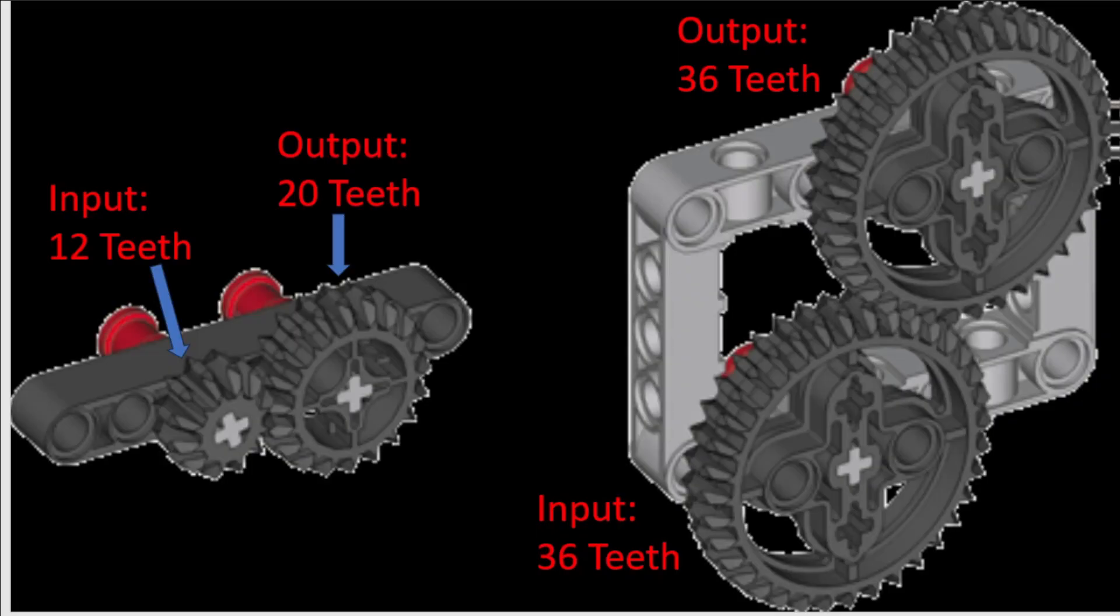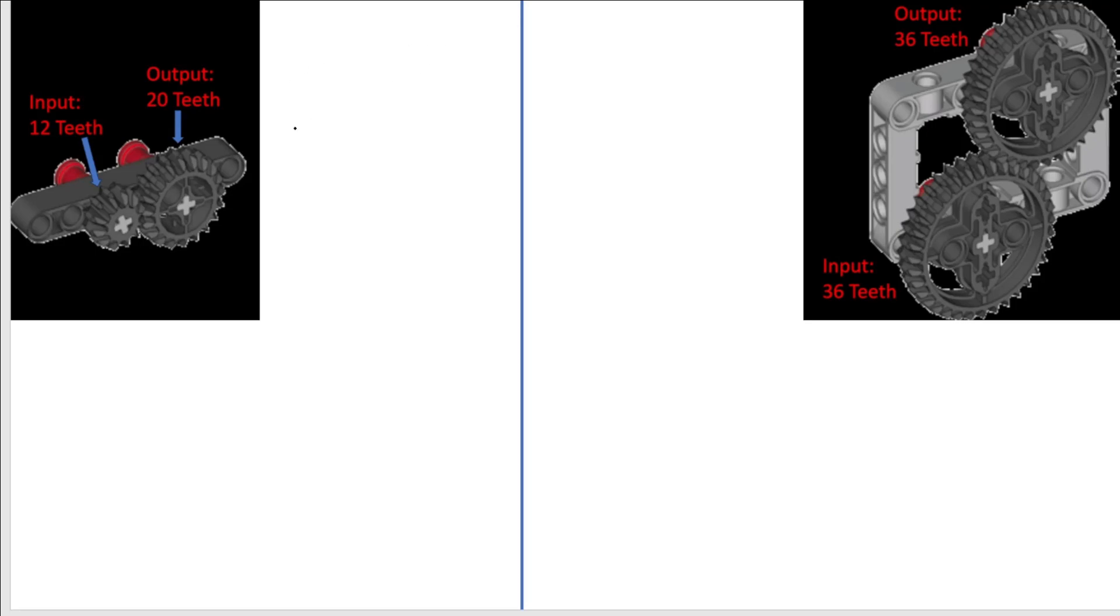So I want you to pause the video and try to calculate the gear ratio of these two trains. Okay, so for this first one, gear ratio equals the output over the input, which in this case is 20 for the output and 12 for the input, and that gives you 1.667 as your gear ratio. For this one, gear ratio equals 36 in the output divided by 36 in the input, and that would give us a gear ratio of 1. Well done if you got those correct.